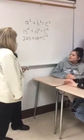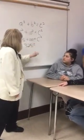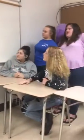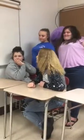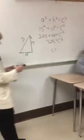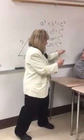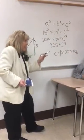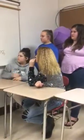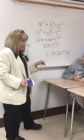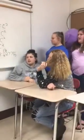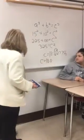Then you add 225 plus 100. What's that? 325. And you bring down your C squared. To get C, you take the square root of 325, which is 18.027756. If I round to the nearest tenths place, which digit is in the tenths place? Zero. To see if it stays a zero or rounds up, I look to the digit to the right — it's 2, so it stays the same. C equals 18.0 yards.